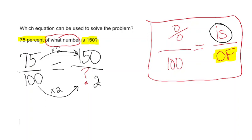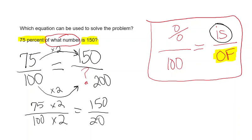And 100 times 2 is 200, so the answer here would be 200 is the number. 75 percent of 200 is 150, and we got that by taking 75 times 2 and 100 times 2 to equal 150 over 200.